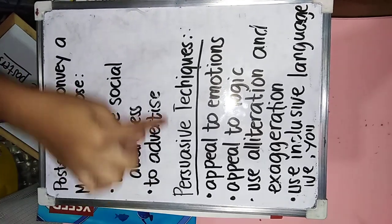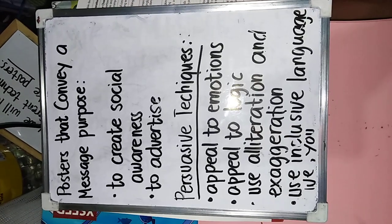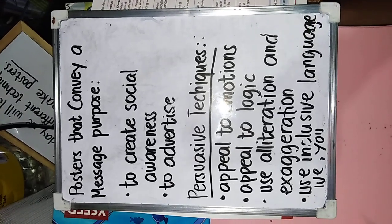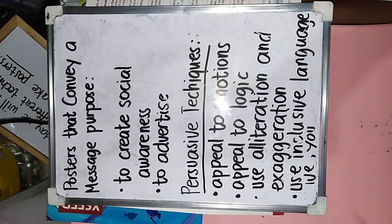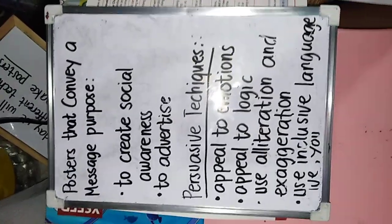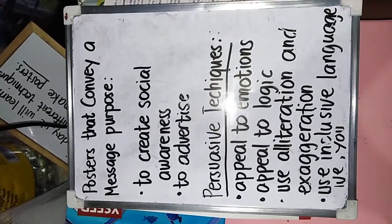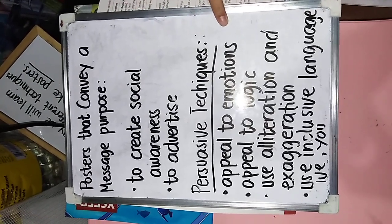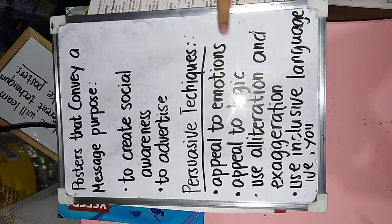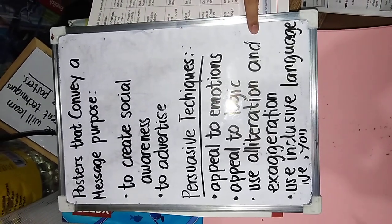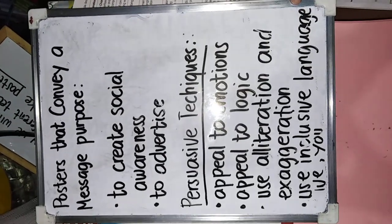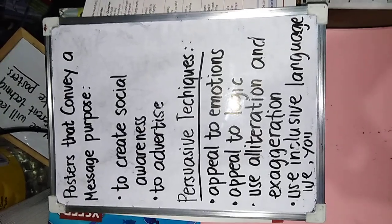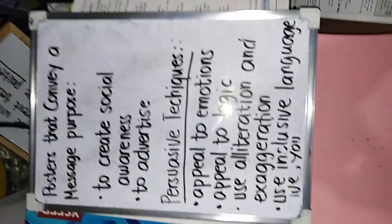We're looking at persuasive techniques. We can also use alliteration and exaggeration to attract readers' attention. Use of fewer and precise words helps make the message of a poster easy to remember. So persuasive techniques include: appealing to emotions, appeal to logic, use of alliteration and exaggeration, and inclusive language like we, you, and us — so the reader feels that he or she is included in the poster.